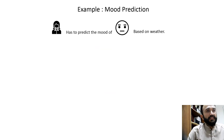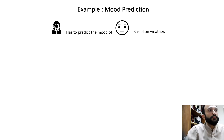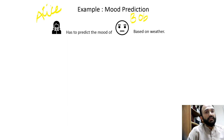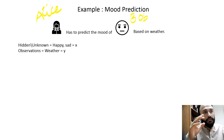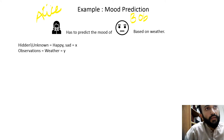Let's consider two people: a girl named Alice and a guy named Bob. Alice has to predict the mood of Bob based on the weather. This all comes down to basic probability.